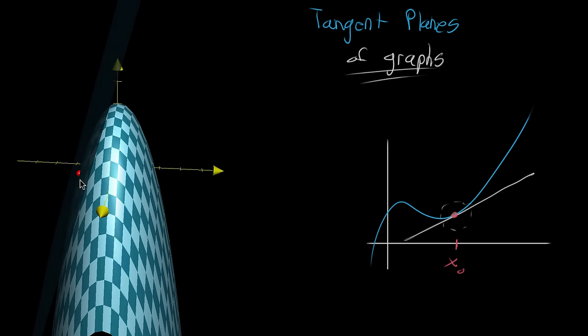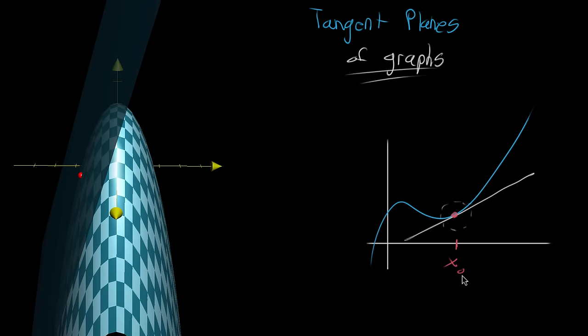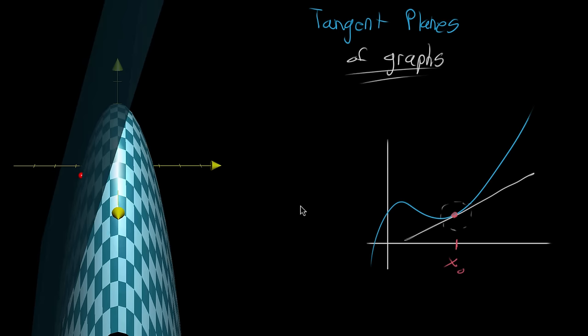And if we think about what this input point corresponds to, it's not x sub 0, a single variable input like we have in the single variable world. But instead that red dot that you're seeing is going to correspond to some kind of input pair x sub 0 and y sub 0.